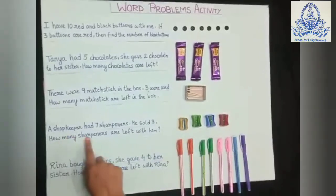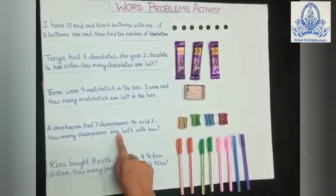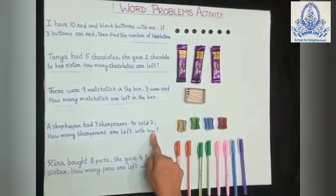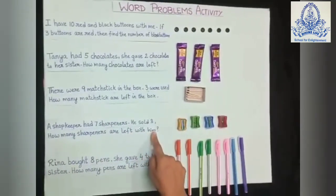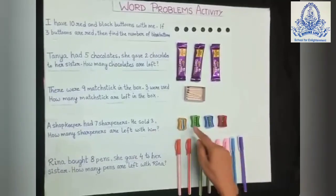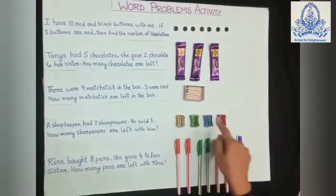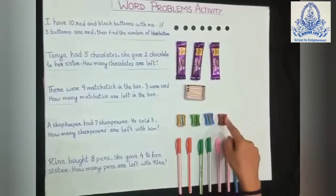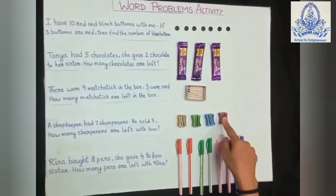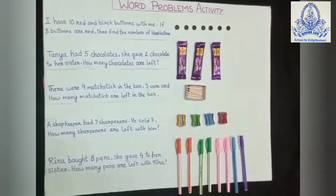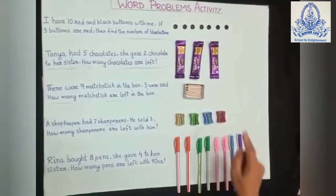How many sharpeners are left with him? Counting what's left with the shopkeeper: 1, 2, 3, 4. Four sharpeners are left with the shopkeeper. So the answer will be 4.